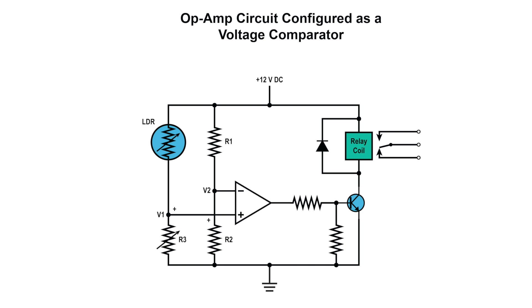As the light level increases, the output will switch back, turning the relay off. The preset resistor R3 can be adjusted to increase or decrease resistance.